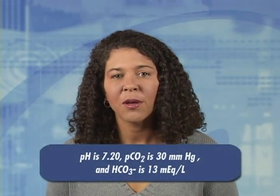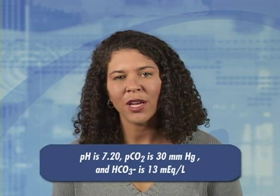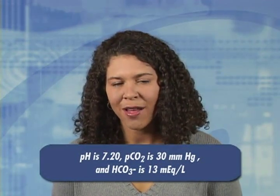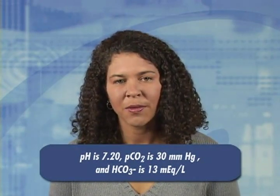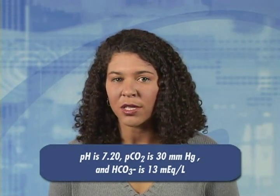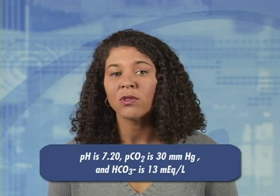As the body begins to compensate by breathing off carbon dioxide, the PCO2 will begin to drop in an attempt to eliminate acid present in a volatile state. Client number two: pH is 7.20, PCO2 is 30 mmHg, and HCO3 is 13 mEq/L. The pH is low, so the client has acidosis. The origin is metabolic because the bicarbonate is also decreased, but the PCO2 has also dropped, demonstrating evidence of compensation. The compensatory change always moves in the same direction as the primary change. When there is compensation, the acid-base disturbance is referred to as partially compensated metabolic acidosis.